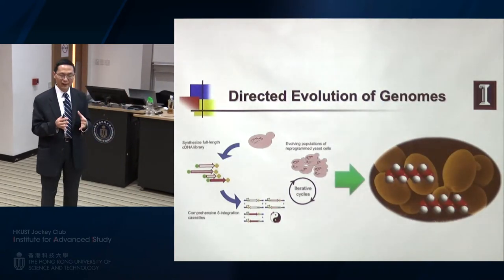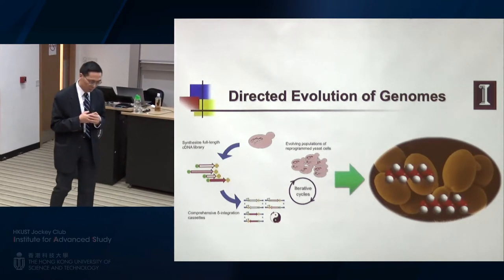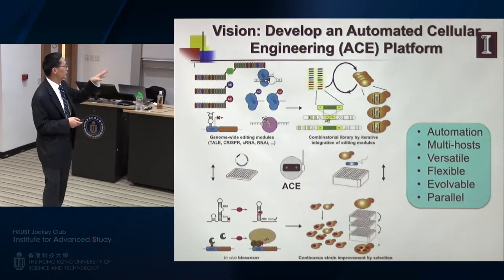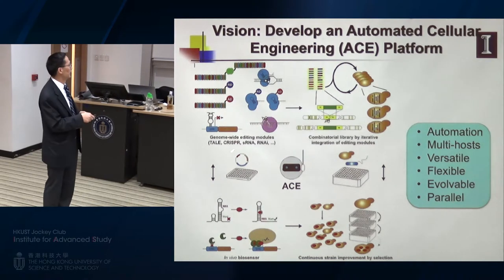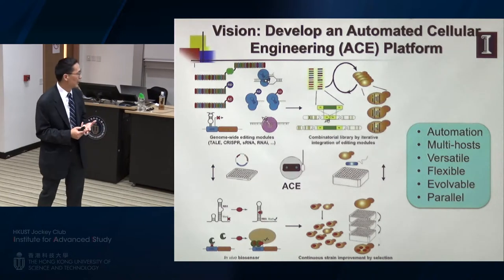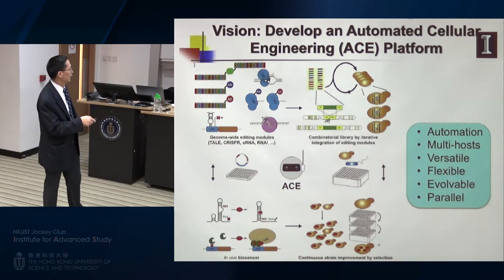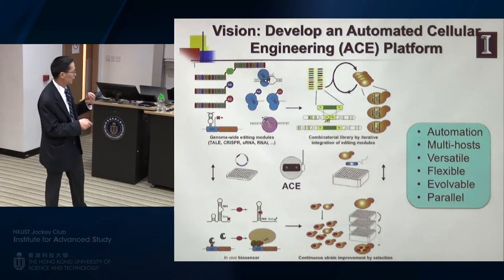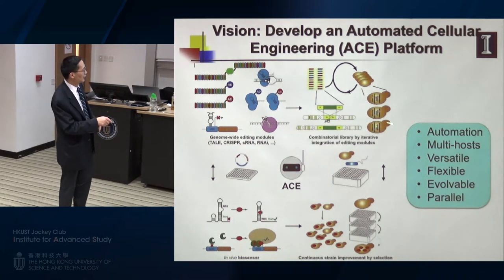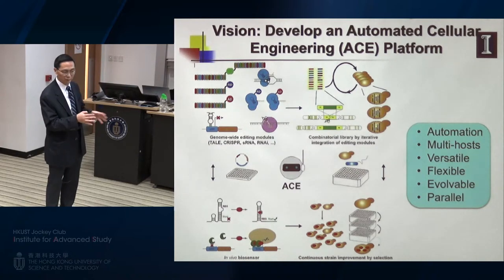I want to spend more time on recent work. How can we use directed evolution approaches to engineer whole organisms — performing genome-scale engineering? My vision is to develop an automated cellular engineering platform with genome-wide editing modules based on TALENs, CRISPRs, small regulatory RNAs, or RNA interference. We use those tools to perturb gene expression of all genes in the cell, then use high-throughput screening or selection to identify improved mutants, integrate beneficial editing modules into the chromosome, and repeat the cycle — making the whole process automated and versatile for different organisms.